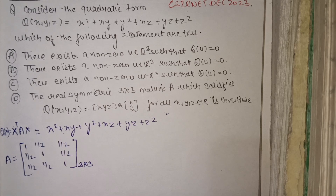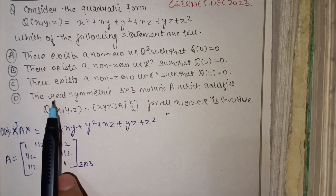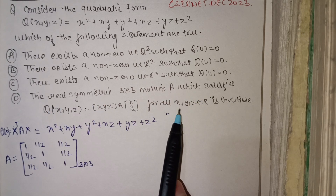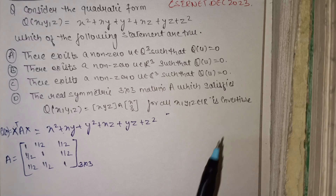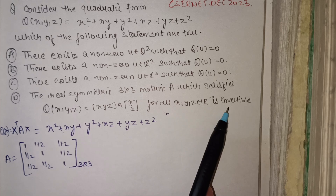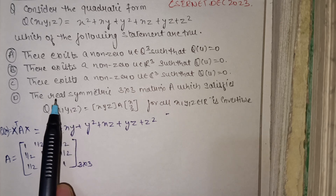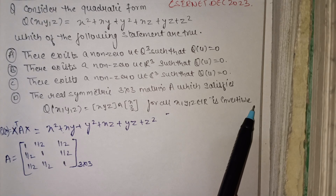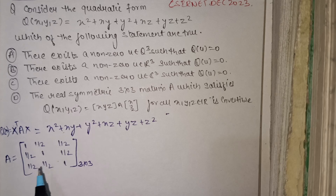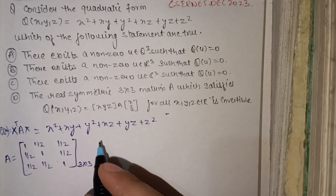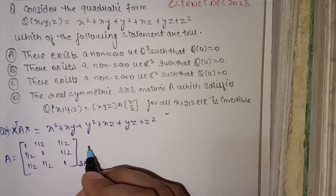Now we look at option D: the real symmetric 3×3 matrix A associated with this quadratic form is invertible. We have a real symmetric matrix A with real entries. To check invertibility, we check whether the determinant is zero or not — if the determinant is non-zero, then it is invertible.